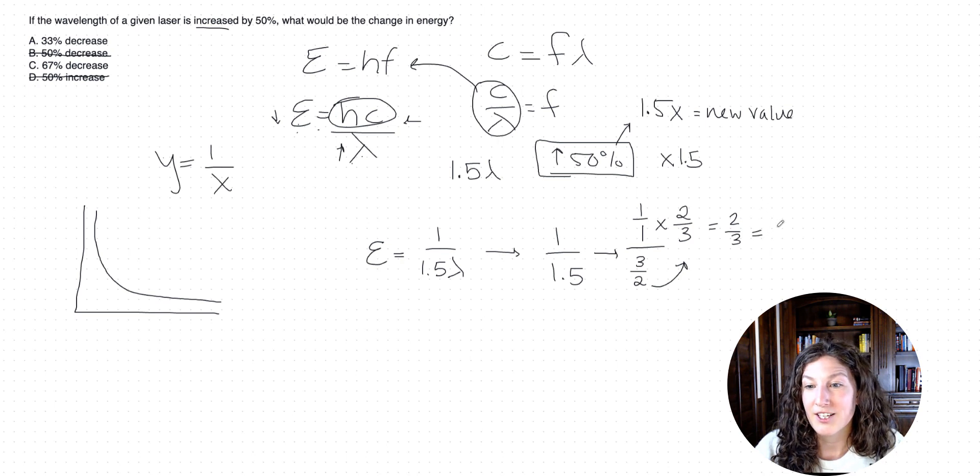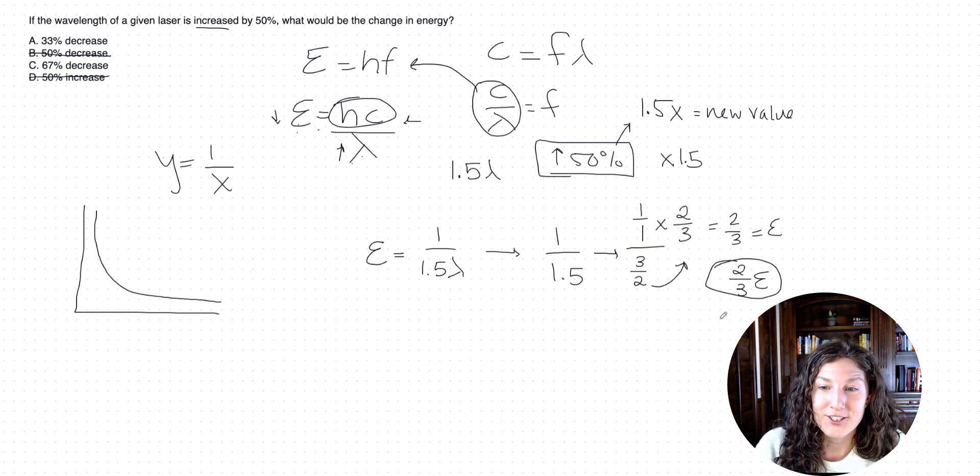So that is going to be the change in energy. So it's going to be 2 thirds energy. Now this could be the answer if that's how they gave it to us, but they didn't. They gave it to us in a percentage decrease or increase. So now here's where it gets a little tricky. It's very tempting to pick C here. 2 thirds, that means 67, 67% decrease. But now I want you to think about this again.